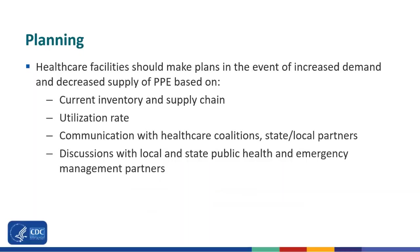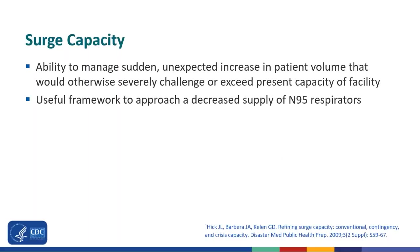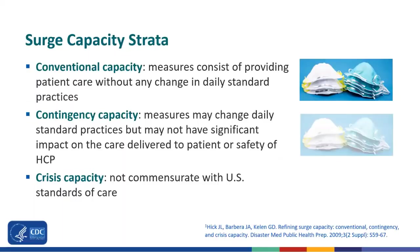We recommend that healthcare facilities make plans in the event of increased demand and decreased supply of PPE based on an understanding of their current inventory and supply chain, their utilization rate, communication with healthcare coalitions and state and local partners, and discussions with public health and emergency management partners. CDC has framed these strategies within the hierarchy of controls using the surge capacity approach. Surge capacity refers to the ability to manage sudden unexpected increases in patient volume that would otherwise severely challenge or exceed present capacity of a facility, and three general strata describe surge capacity along the continuum of care.